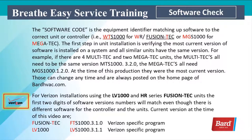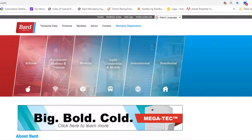Even though there is different software for the controller and the units, the first two digits of the version numbers match. Current versions at the time of this video: for the Fusion Tech, FTS 1000 version 3.1.0; for the LV 1000, LVS 1000 version 3.1.0 and LVS 1000 version 3.1.1. So the first two digits always match up on these versions.